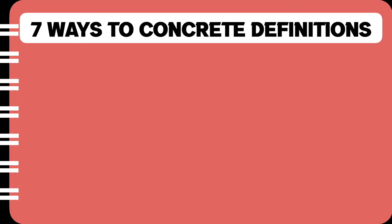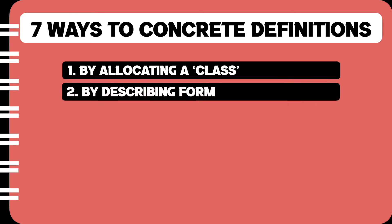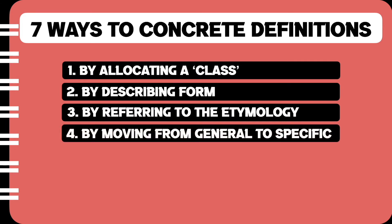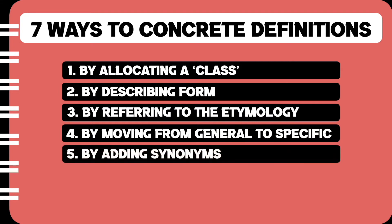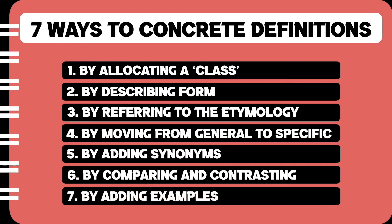There are seven ways to create more concrete definitions. The first one is by allocating the term to a class. The second way is by describing the form or the look of the term. The third way is by referring back to the etymology or the root word of the term. The fourth way is by going from general to specific definition. The fifth way is by adding synonyms. The sixth way is by comparing and contrasting. And the last way is by adding examples.